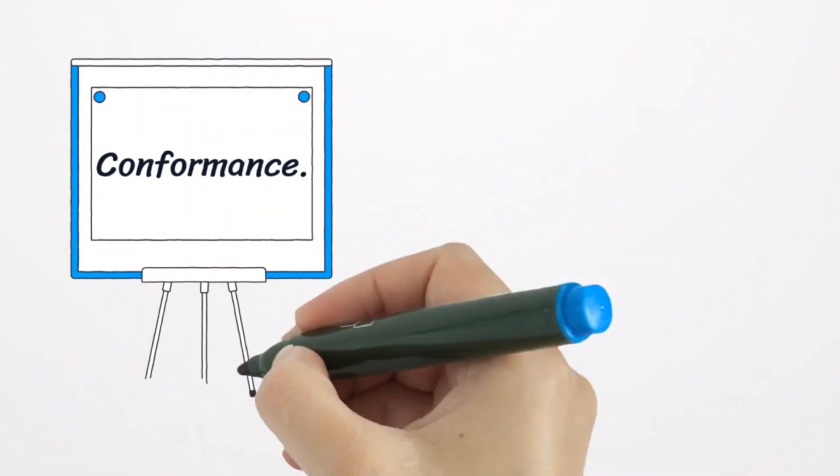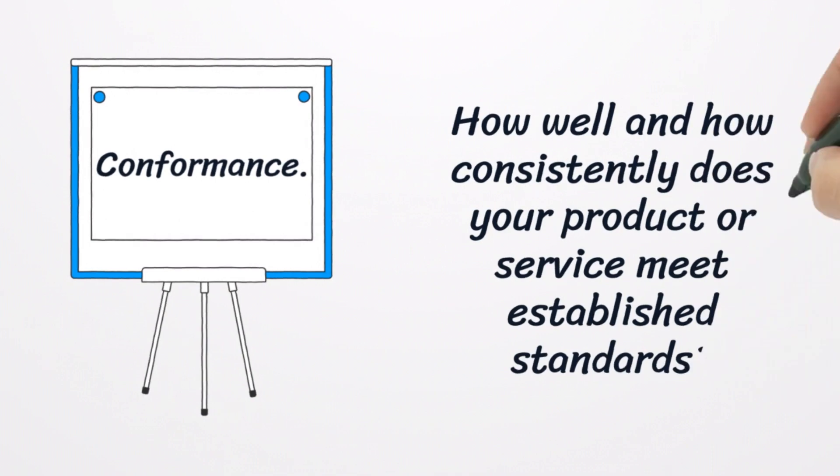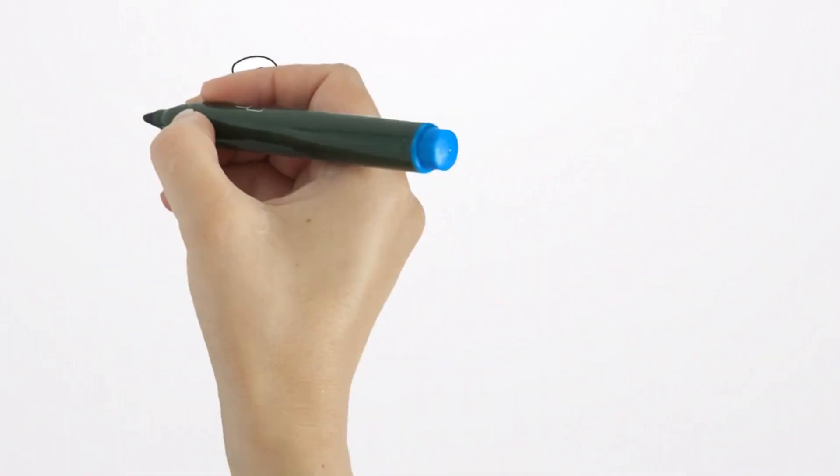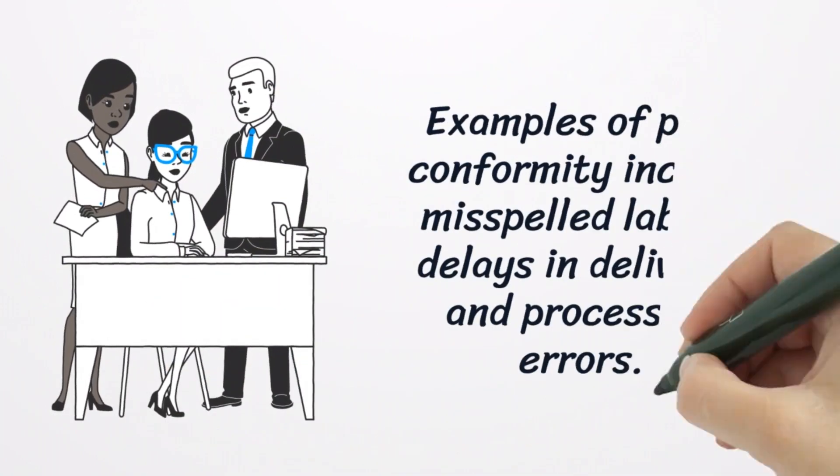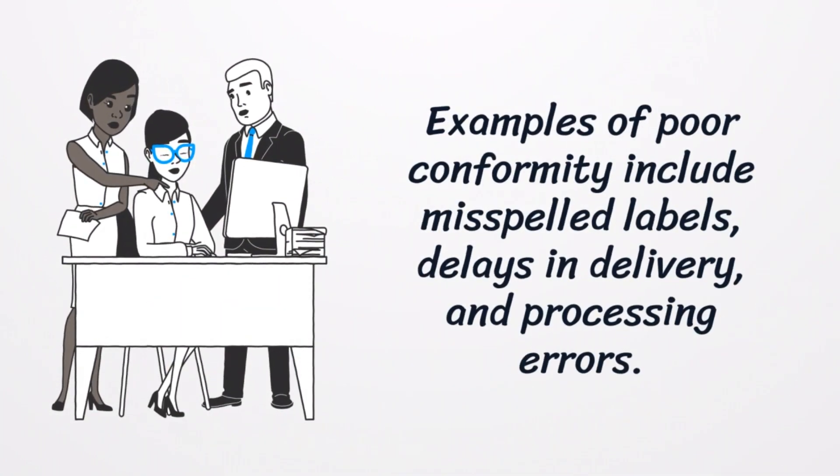Conformance is the fourth dimension. Conformance is how well and how consistently does your product or service meet established standards. Garvin's thoughts about this dimension were influenced by Genichi Taguchi's ideas. Taguchi challenged the assumption that a product either passes or fails. He showed that sales fall gradually, following a precisely predictable pattern, as conformance worsens. Examples of poor conformity include misspelled labels, delays in delivery, and processing errors.